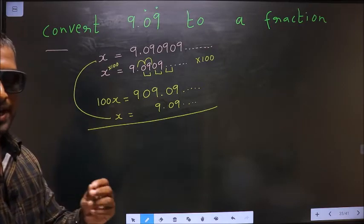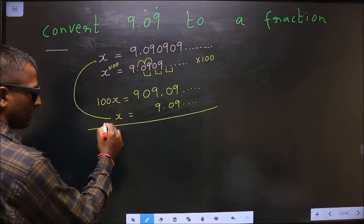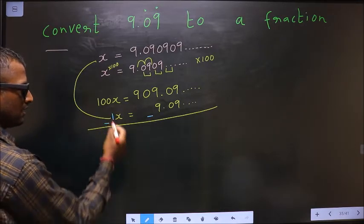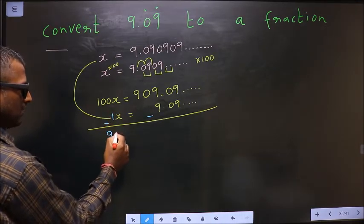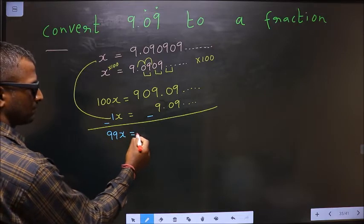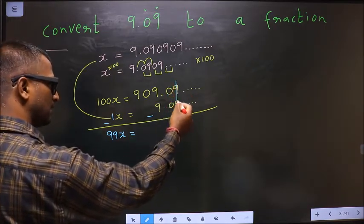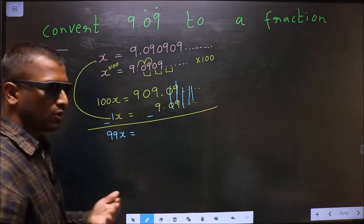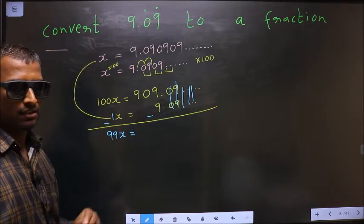Now you should subtract these two. Before X there is no number, which means 1. So 100X minus 1X is 99X. And here, see, when you subtract, this becomes 0, which we do not need to write.